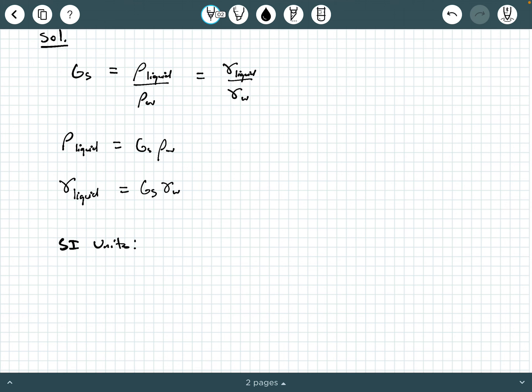So in SI units, what do we know about our properties of water? In SI units, we need to know the density of water. So rho water equals 1,000 kilograms per meter cubed, and we also know that gamma water equals 9.81 kilonewtons per meter cubed.